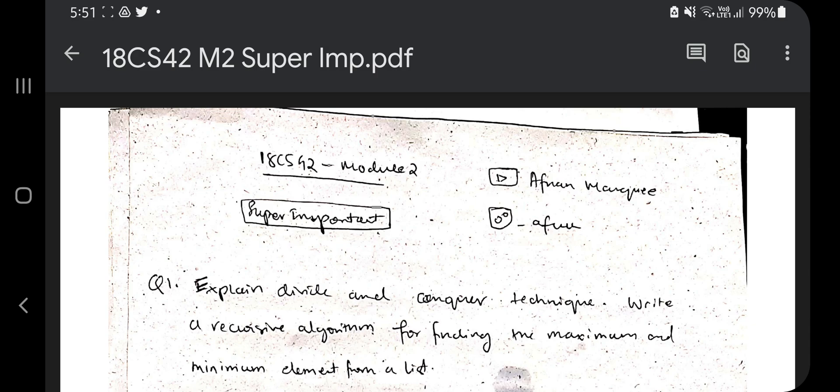For example, merge sort, quicksort, and binary search, finding maximum minimum element - these are the things which are mostly asked. Make sure you are thorough with that. The detailed explanation you can find in the videos which I've already uploaded in the playlist. I will be just referring to the important questions and telling you where to find the answer and what key points you have to write in the exam.